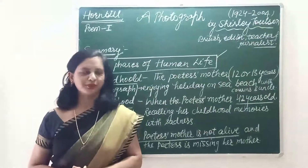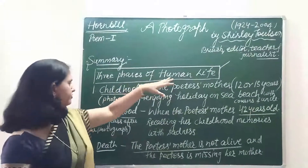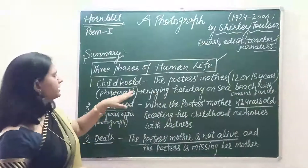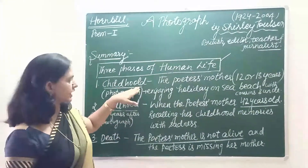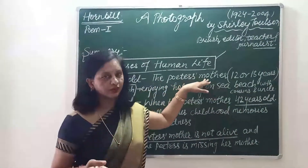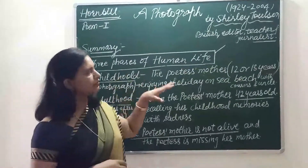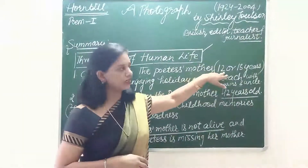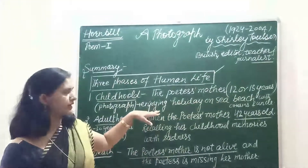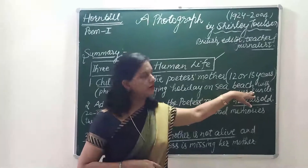Now let's discuss the summary of the poem. This poem describes the three phases of human life: childhood, adulthood, and death. In the first phase — childhood — the poetess describes her mother's childhood days with the help of a photograph, in which her mother is only 12 or 13 years old.